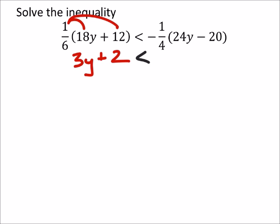And this is less than a negative 1/4th times 24y is a negative 6y, and a negative 1/4th times negative 20 is a positive 5 right here.